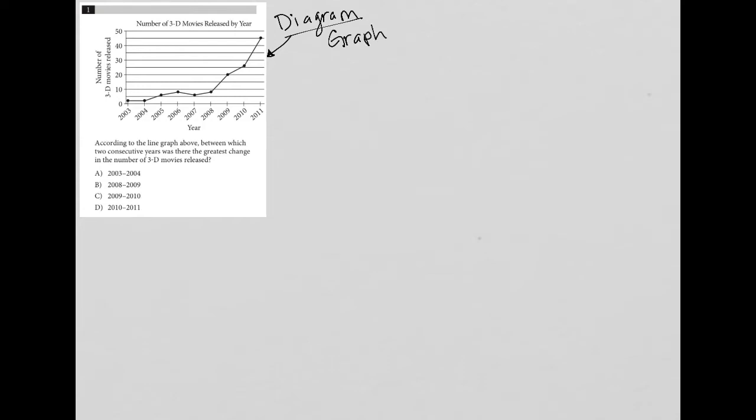For graph questions, I pay attention to the x-axis, which in this case is the years, and the y-axis, which is the number of 3D movies released. I also check if there are any actual points on the graph - there's a point for every single year. I'm going to circle one of these points using the pinpoint method.